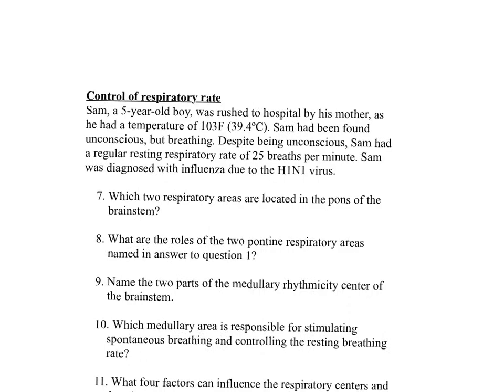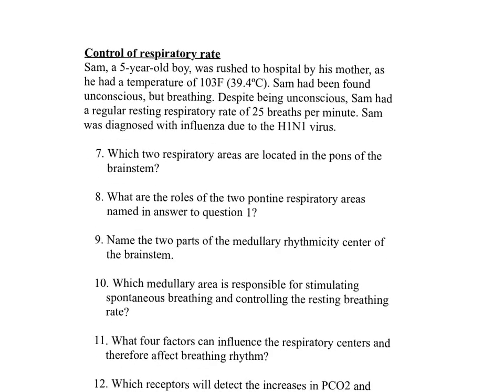Our next case study is control of the respiratory rate. Sam, a five-year-old boy, was rushed to the hospital with a temperature of 103°F (39.4°C). Sam had been found unconscious but breathing, with a regular resting respiratory rate of 25 breaths per minute. Sam was diagnosed with influenza due to the H1N1 virus. Question seven: which two respiratory areas are located in the pons of the brainstem? The apneustic area and the pneumotaxic area are located in the pons.